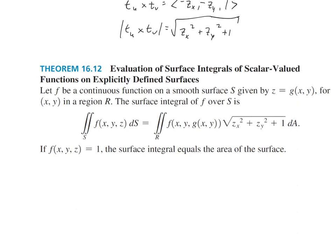Theorem 16.12 says that for an explicitly defined surface, instead of the general magnitude of the cross product, we substitute √(z_x² + z_y² + 1) into the formula. This is just a slightly different formula that shortens the process. You can still use the previous method — both are valid — and the homework may specify which approach to use.